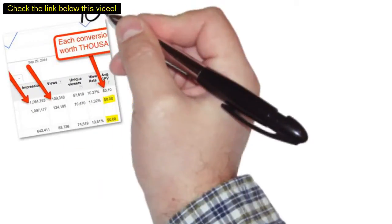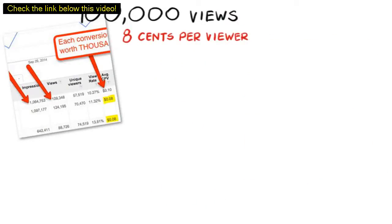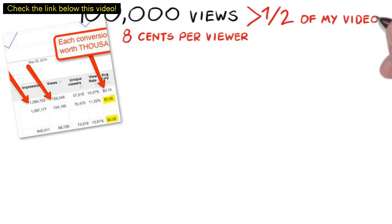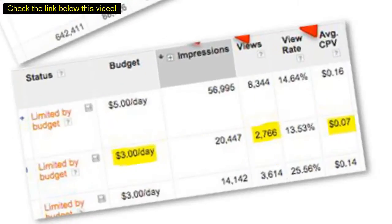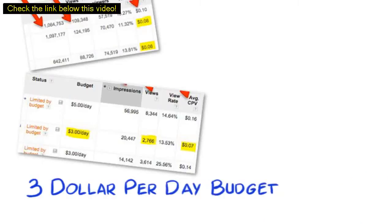As you can see, this campaign is getting well over 100,000 views and only costing $0.08 per viewer, who then goes on to watch more than half of my video. And this one is only running on a $3 per day daily budget and still getting thousands of views and only costing $0.07 per viewer.